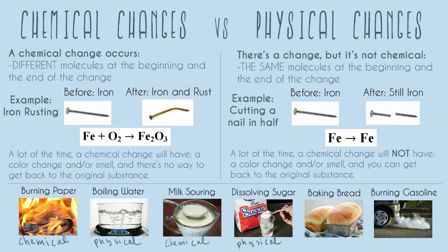Dissolving works because each sugar molecule is at first just bonded next to its other sugar molecules. But once it's dissolved, all the water molecules surround it. We can't see individual molecules, so once all the sugar is broken up and separated by water, it seems invisible to us — even though it's still there and it's the same molecule it used to be. Any type of dissolving is always a physical change.